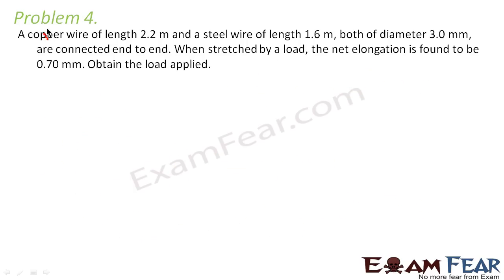Now let us look at the fourth problem. It says a copper wire of length 2.2 meters and a steel wire of length 1.6 meters, both of diameter 3 millimeters, are connected end to end.